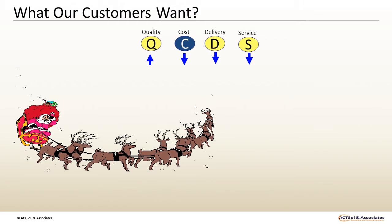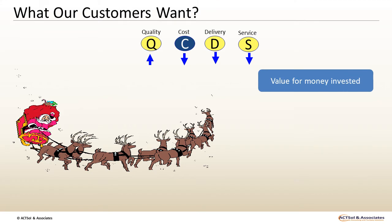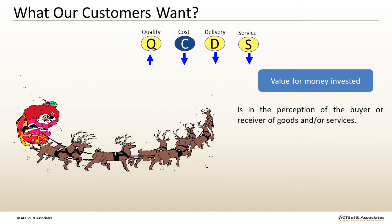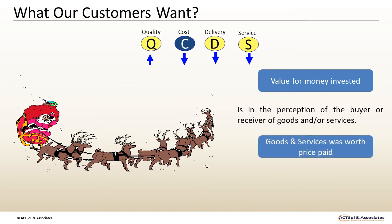The second attribute is Cost. By the term cost, we mean the cost at a competitive price which a customer is willing to pay. It is the value for money paid or invested by the customer. Value for money is in the perception of the buyer or receiver of goods and/or services. Proof of good value for money is in believing that the goods or services received were worth the price paid.